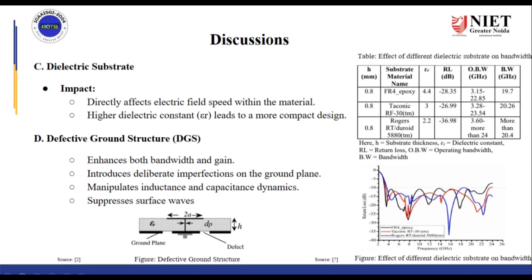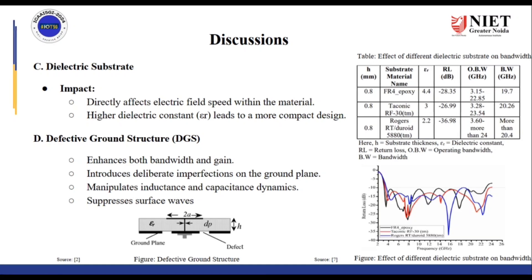The next technique is defective ground structures. These involve incorporating defects into the ground plane. Normally in antennas the ground plane is very smooth, but in this technique we introduce some defects into the ground plane. This changes and alters the direction of the currents that are flowing, thereby suppressing surface waves and enhancing both the bandwidth and the gain.